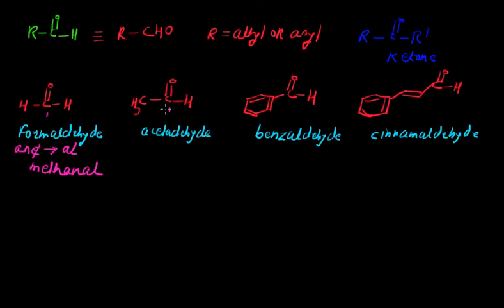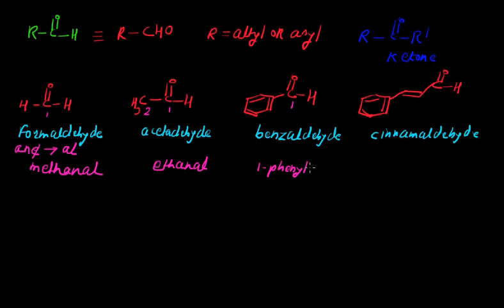We can also number acetaldehyde: carbons 1 and 2, giving 2 carbon atoms, so the IUPAC name becomes ethanal. For benzaldehyde, we apply IUPAC naming as well. At carbon number 1 we have a phenyl substituent, so this becomes 1-phenylmethanal.